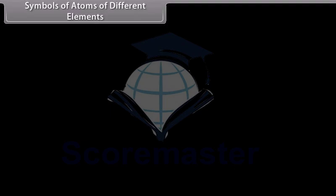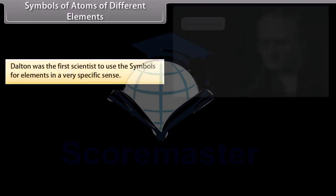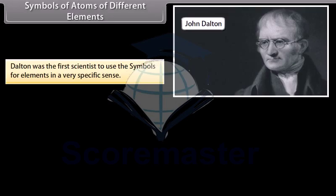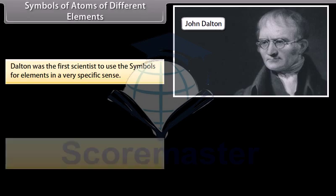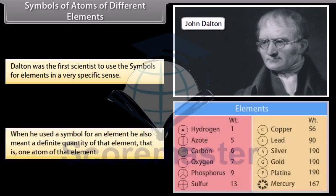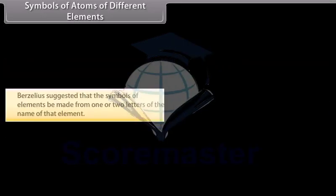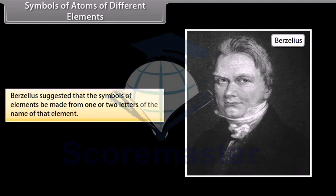Symbols of atoms of different elements. Dalton was the first scientist to use the symbols for elements in a very specific sense. When he used a symbol for an element, he also meant a definite quantity of that element, that is one atom of that element. Berzelius suggested that the symbols of elements be made from one or two letters of the name of that element.